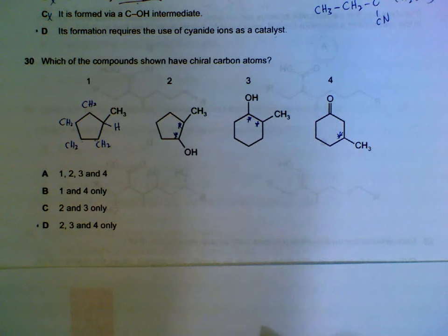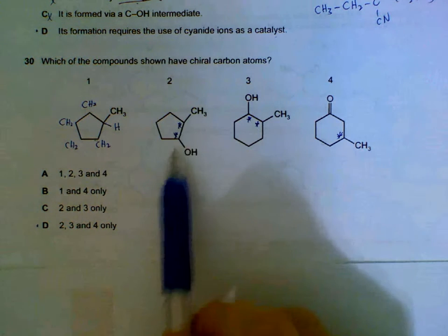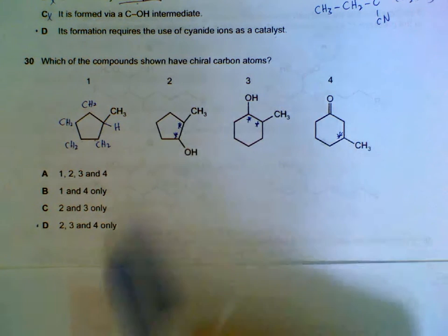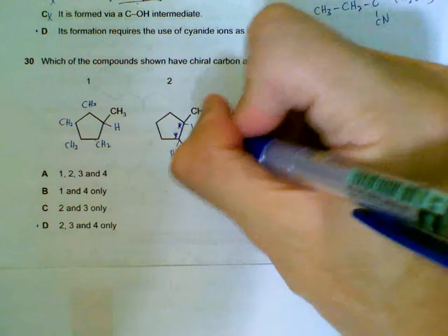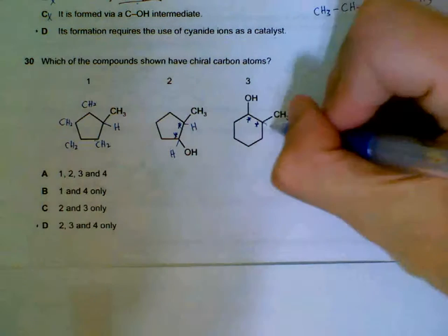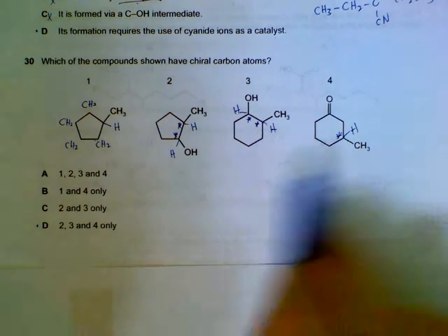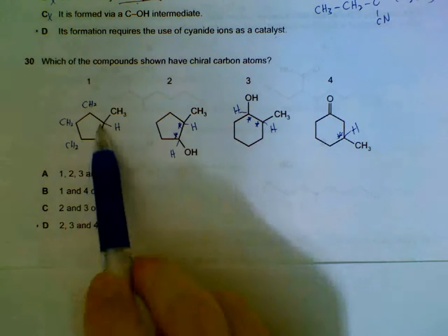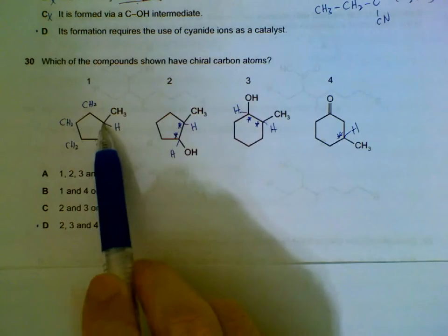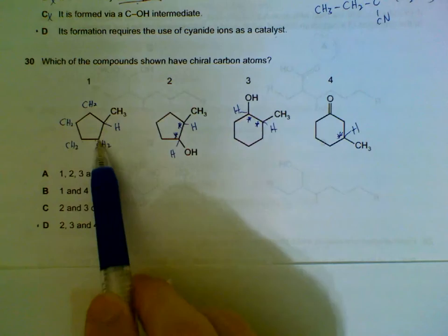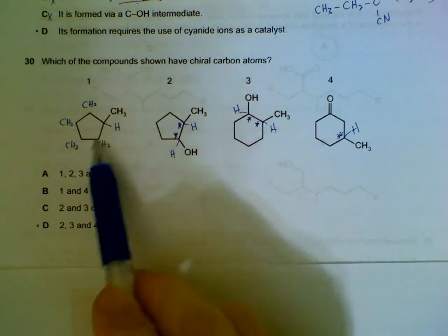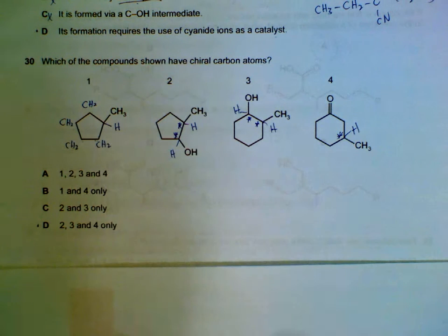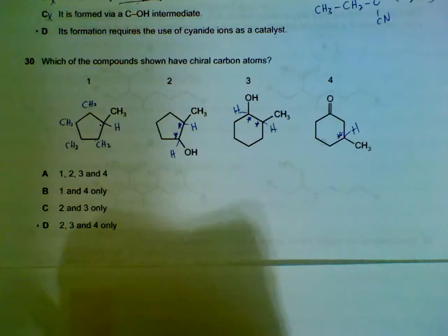Number 30: which of these compounds have chiral carbons? Sort out the obvious ones first — these are the chiral centers, joined to four different groups (with hydrogen implied). The chiral carbons are on compounds 2, 3, and 4. Number 1 is not a chiral center because going in either direction along the chain gives CH2 CH2 CH2... the same regardless of direction, so it is not joined to four different groups.